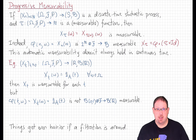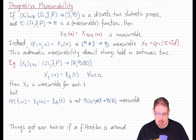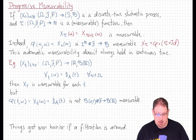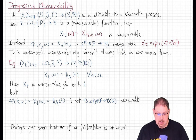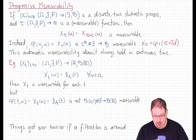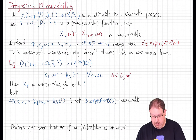This automatic measurability when you compose a stochastic process with a random time does not work that way and does not always hold in the continuous time setting. Let's look at an example. Consider the following real-valued stochastic process on the positive real line. We fix some subset A of the positive real line, and we define X_t to be constant, independent of ω, equal to just the indicator of that set at t. That is to say, X_t is 0 or 1 valued — it takes the value 1 if t is in A, and 0 if t is not in A. Let's fix some subset of the positive real line that is not a Borel set.